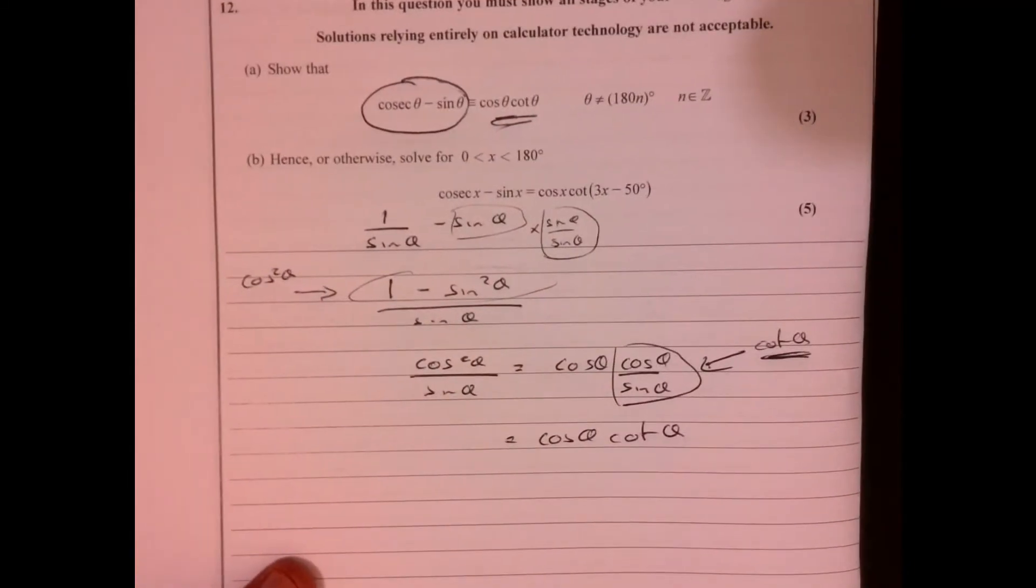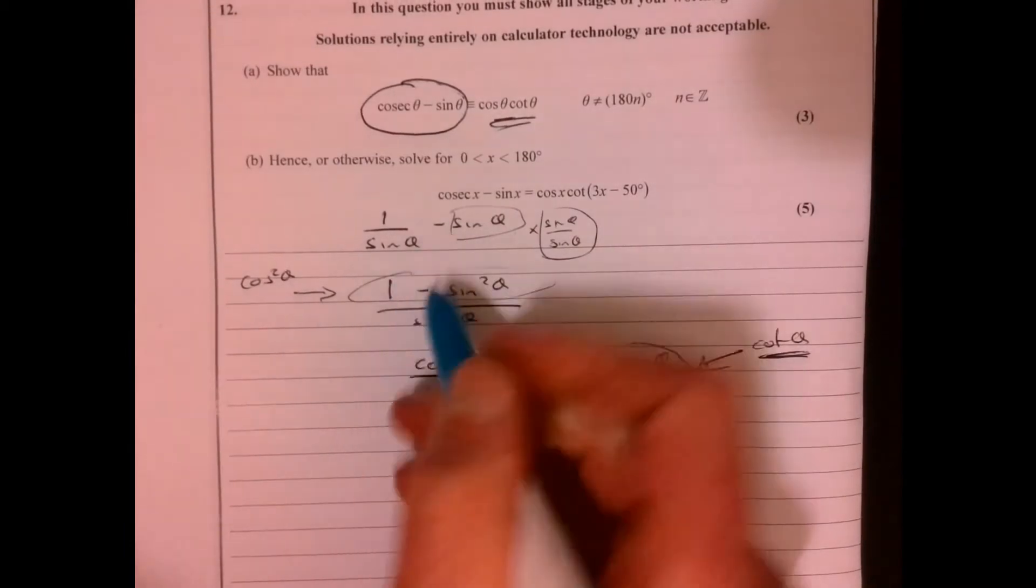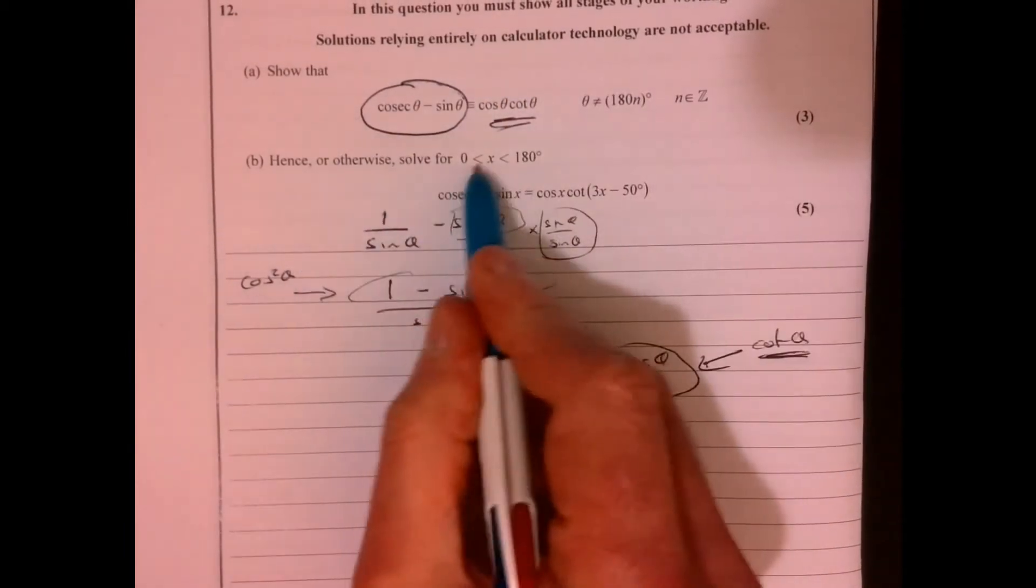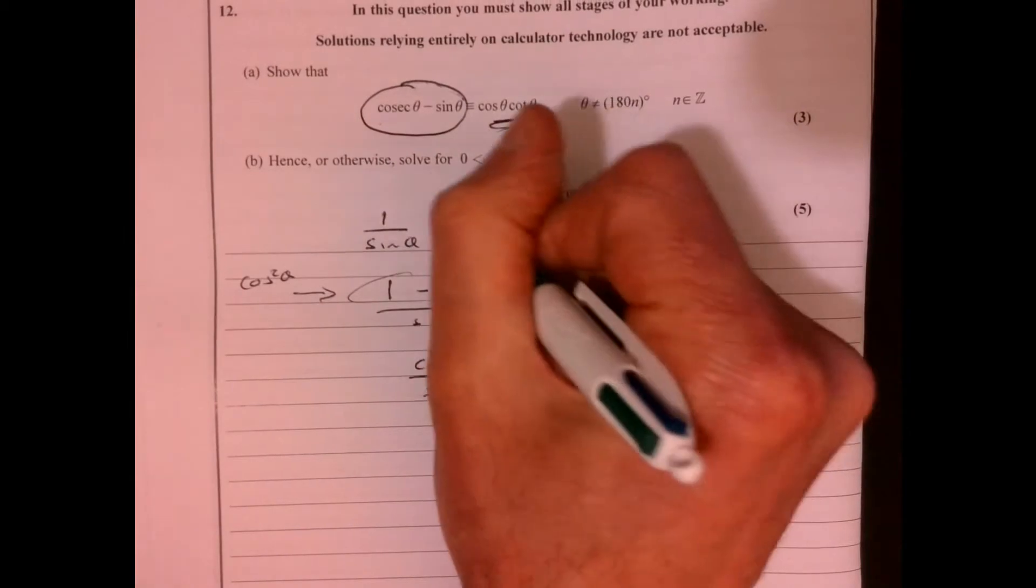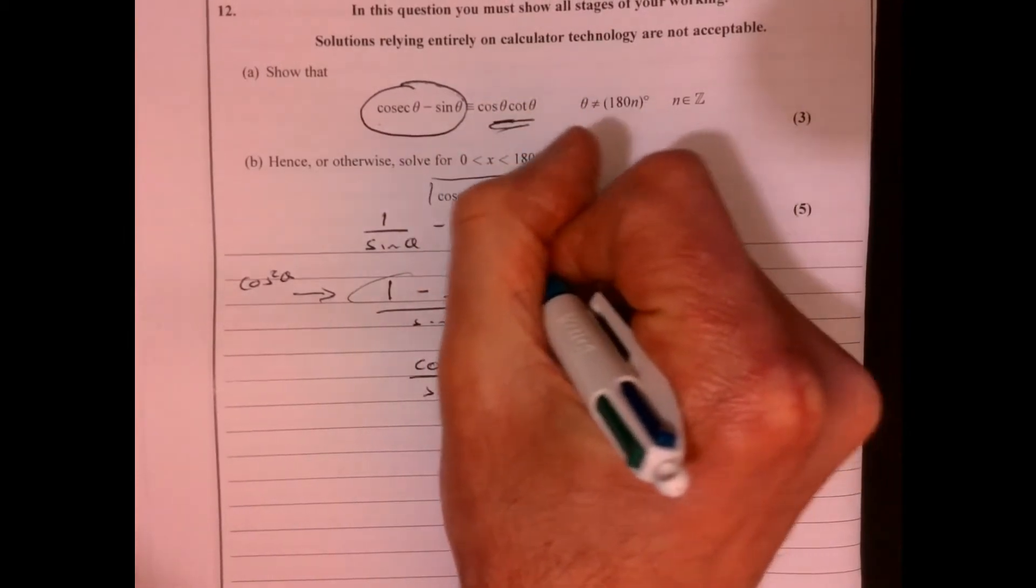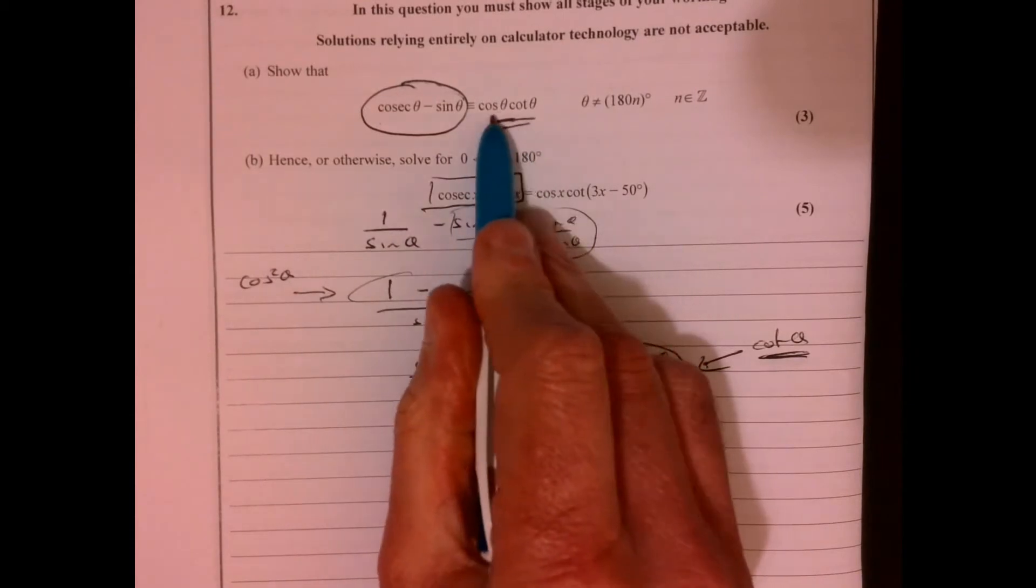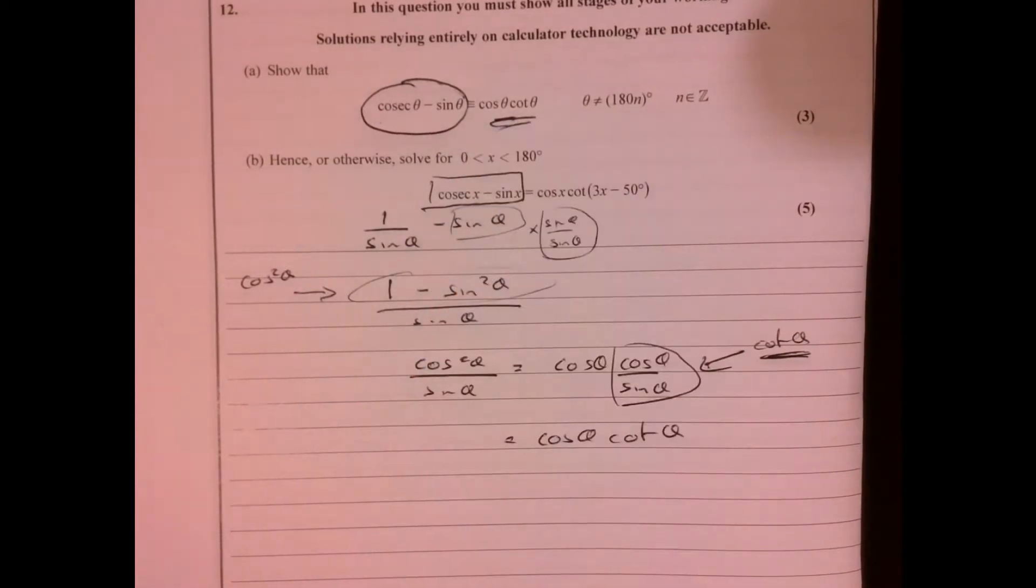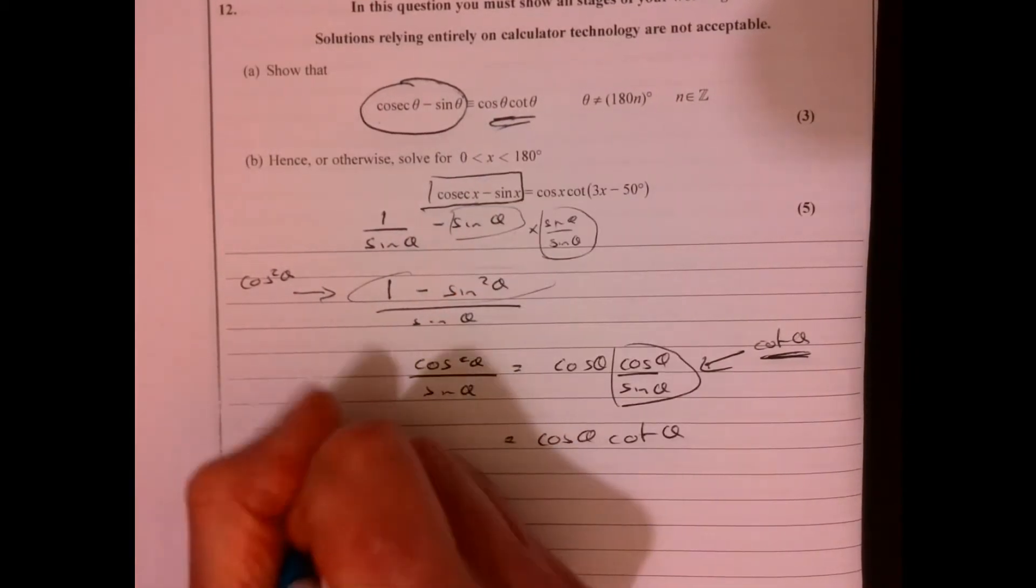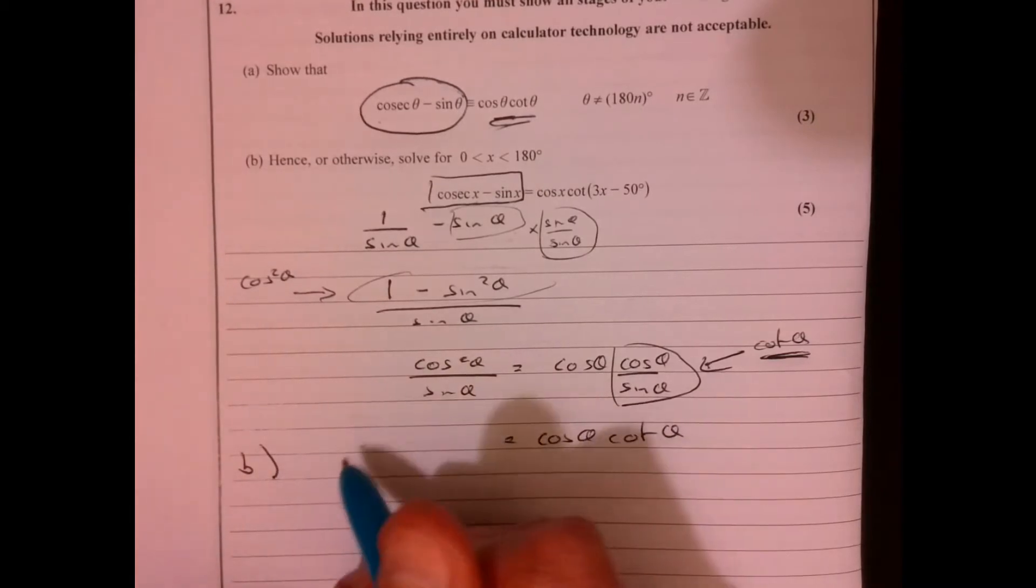Let's have a look at part B. Now, the first thing that I'm going to think of here is, why have they just got us to do this here? So look at this here. And let's replace this effectively with cos cot. So let's write out what we've got.